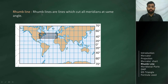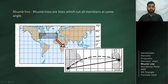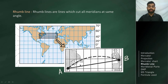Now, what is a rhumb line? A rhumb line is a line which cuts all meridians at the same angle. Suppose we are going from an initial position A to a final position B. The dotted line on your screen is the great circle track between A and B, while the solid straight line is the rhumb line track. This rhumb line cuts all meridians at the same angle, and all lines drawn on a Mercator chart are rhumb lines.